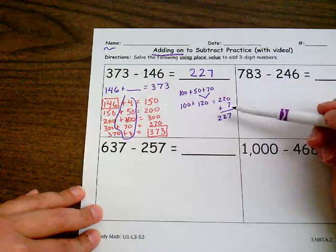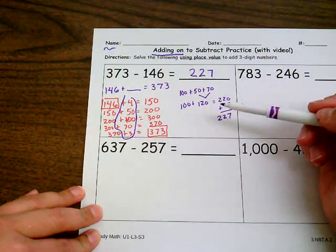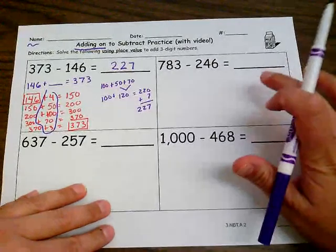So I'm going to get a total of 227. So I know the difference between 373 and 146 is 227. So take a look. If you need to pause the video to catch up, go for it. And then we'll move on to the next problem.